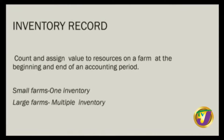Inventory record counts and assigns value to the resources on the farm at the beginning of an accounting period, which normally speaks to a full year. On a small farm, there is normally one inventory record to factor all elements. On a large farm, there are multiple inventory records — for example, a separate inventory for different buildings. Having multiple records allows the farm to reflect on past information over time.